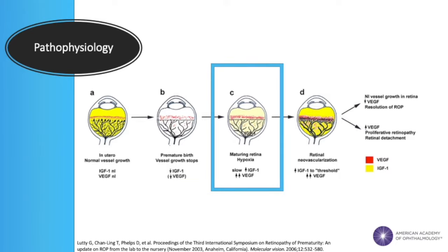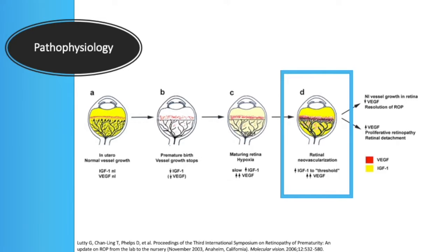However, as the neonate's lungs mature and the supplemental oxygen is removed, the retina begins to experience a relative hypoxia. So, to maintain the higher O2 concentrations it became used to, the retina produces vascular endothelial growth factor, or VEGF. VEGF stimulates the growth of more retinal vessels, which can deliver additional oxygen to correct that perceived deficiency. These new vessels, however, grow too quickly and are of poor quality, so they end up causing more problems, with the most severe consequence being the complete detachment of the retina from the inside of the globe.